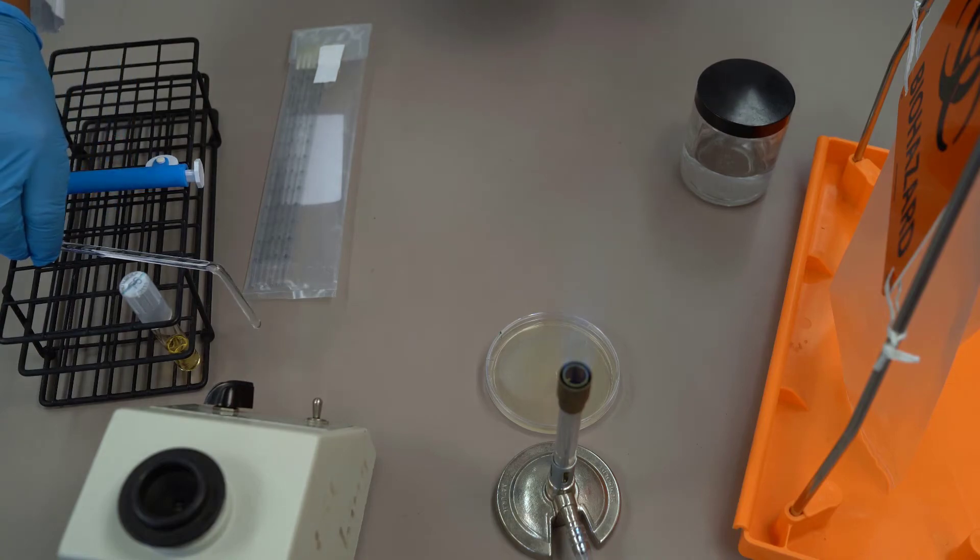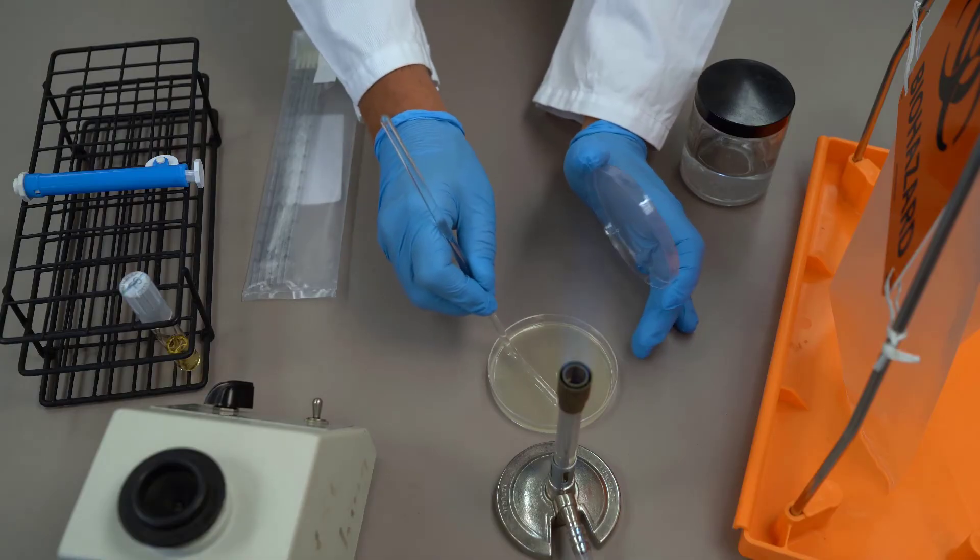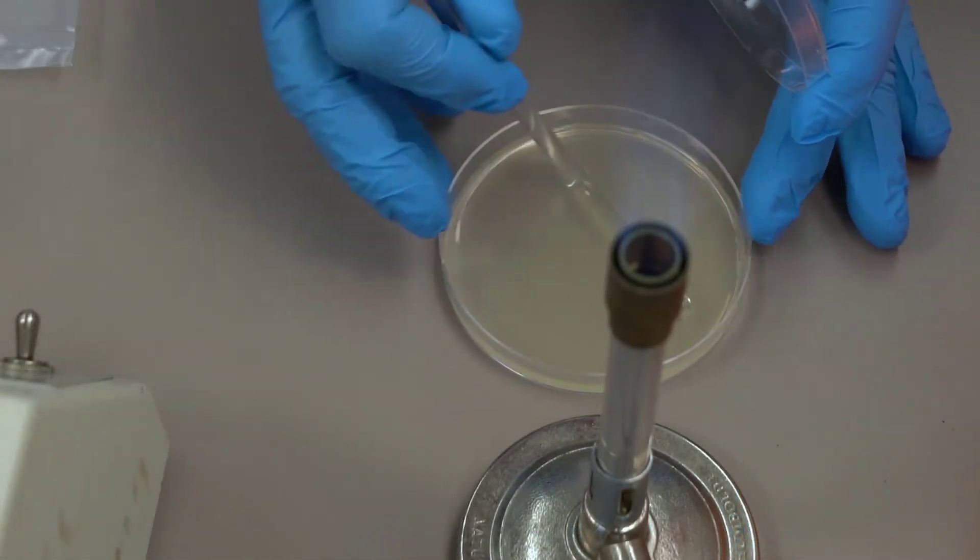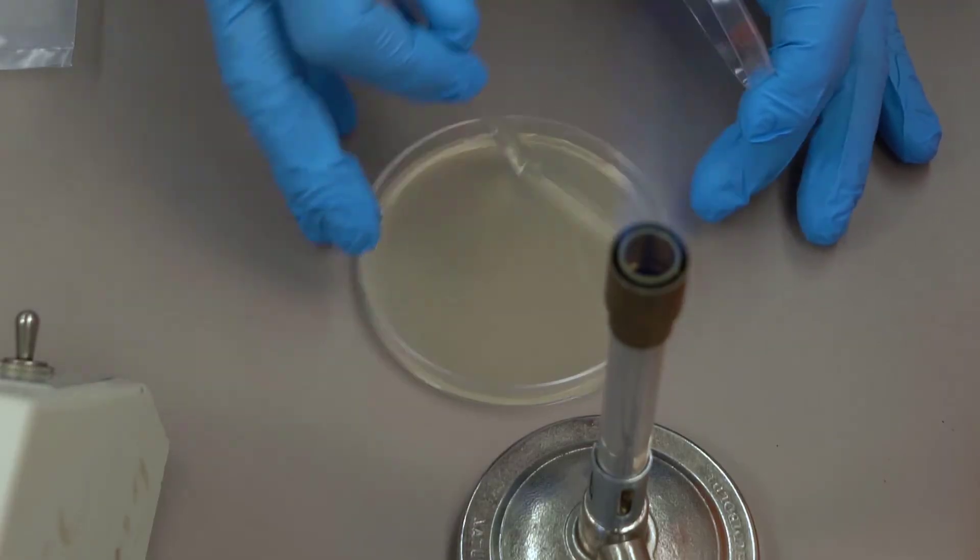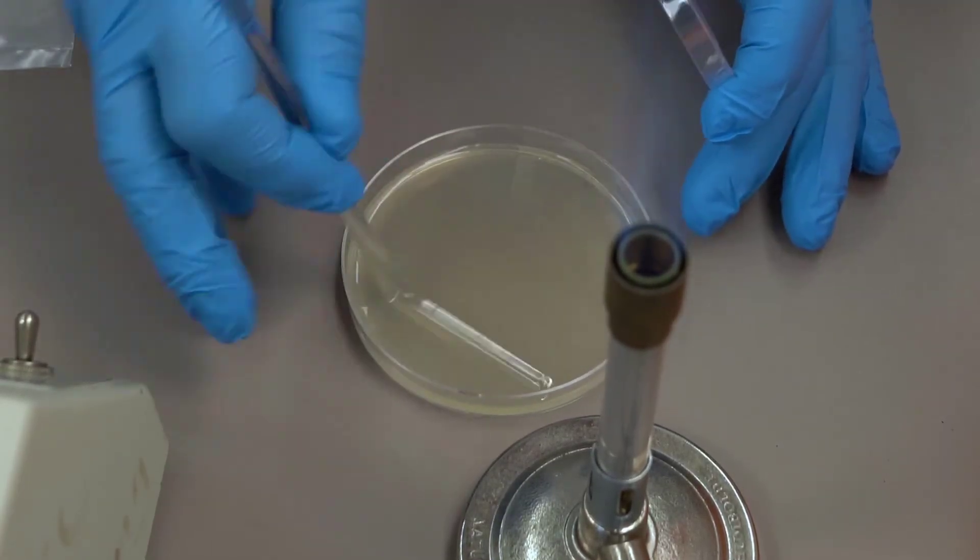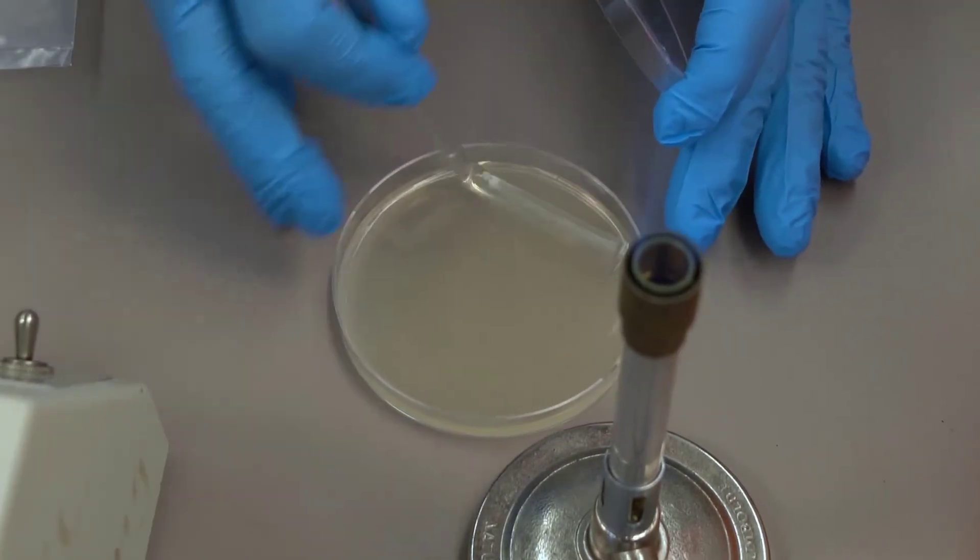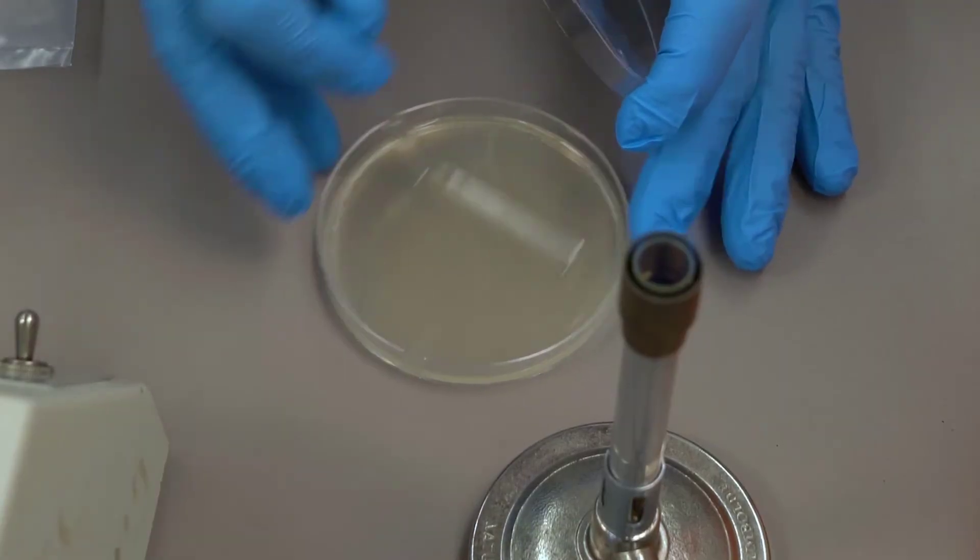We're going to take our glass rod and spread that inoculum across the surface of the plate. You want to work close to the flame whenever your cultures are open to let the convective air currents prevent contaminants from dropping into your cultures. And we're rotating this plate to spread that inoculum evenly across the surface.